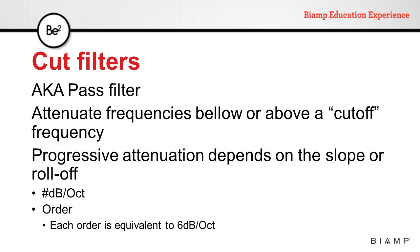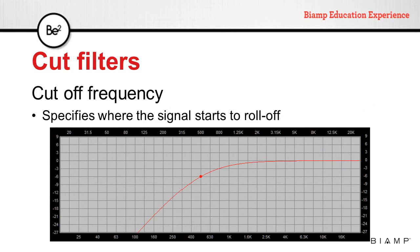Cut filters, also known as pass filters, attenuate frequencies below or above a cutoff frequency. Progressive attenuation depends on the slope or roll-off of that filter. The slope can be identified by the number of dB per octave or the order of the filter, where each order is equivalent to 6 dB per octave. The parameters that define a cut filter are cutoff frequency, slope, and type.